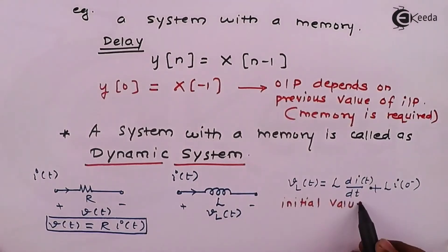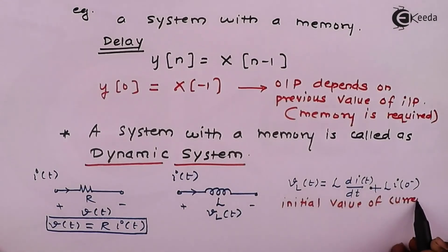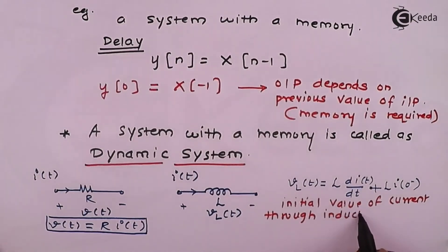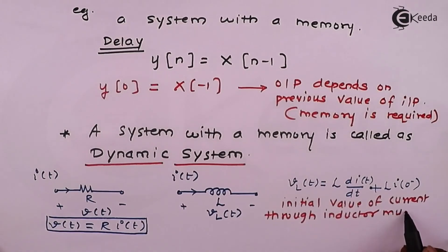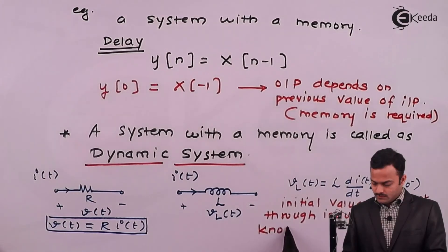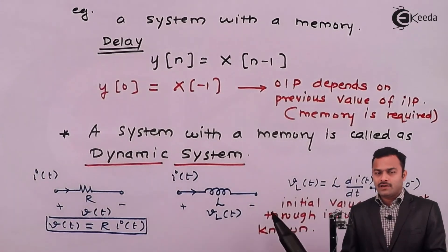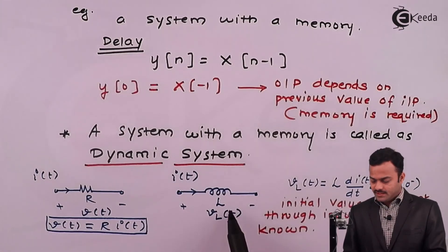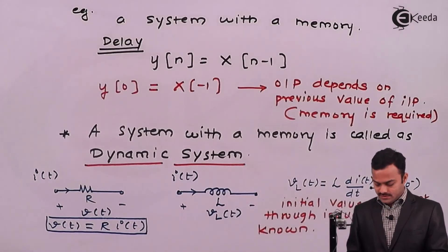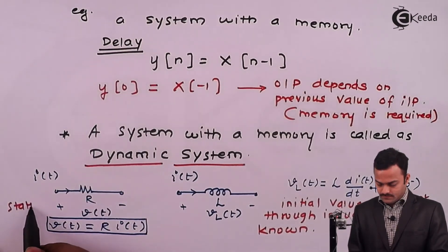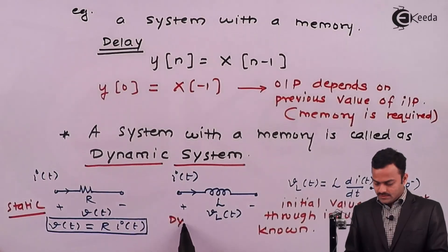Initial value of current through inductor must be known. I can say initial value should be known, that means I need to have a memory. Hence this system will be dynamic. But this system will be static. So this is static and this is dynamic.